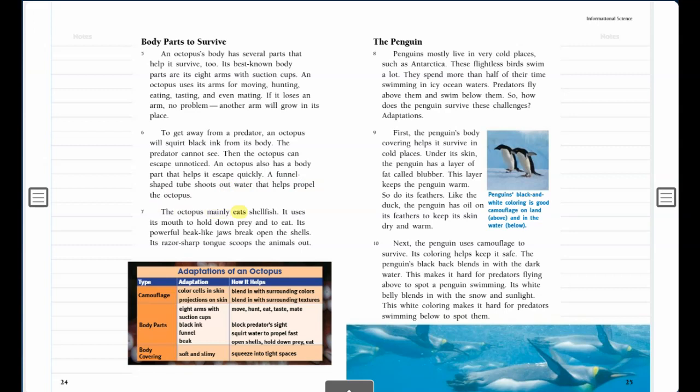The octopus mainly eats shellfish. It uses its mouth to hold down prey and to eat. Its powerful beak-like jaws break open the shells. Its razor-sharp tongue scoops the animals out.